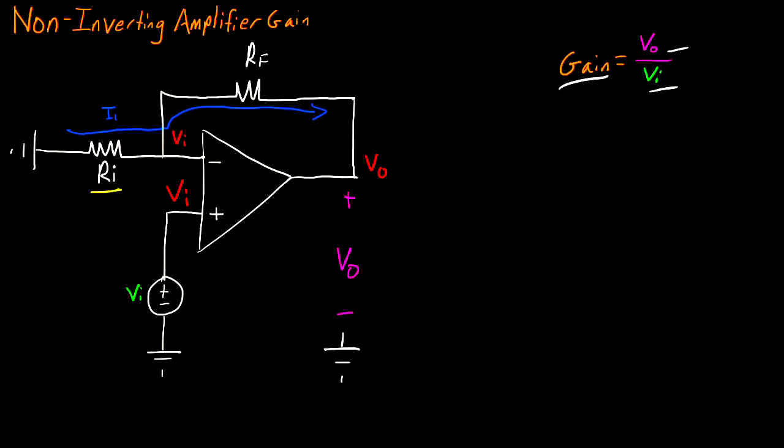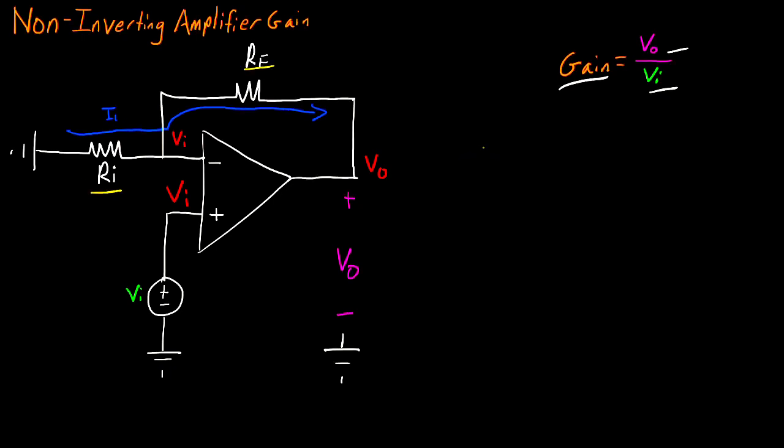Now I'm going to write the equations for my two resistors. So for Ri, we can write that I1 is equal to 0 minus Vi divided by Ri. And for Rf, we can write that I1 is equal to Vi minus Vo divided by Rf.